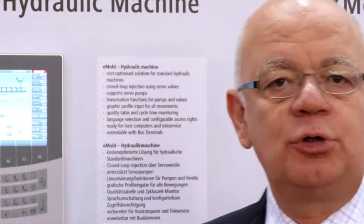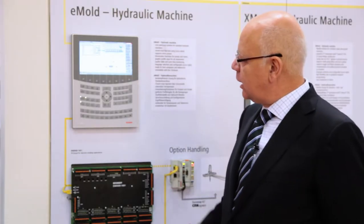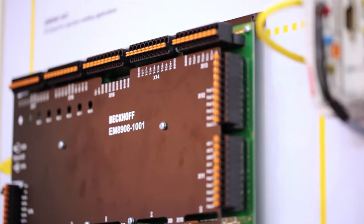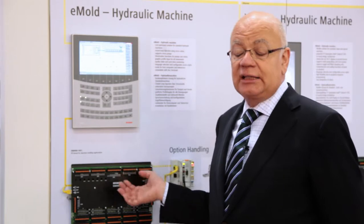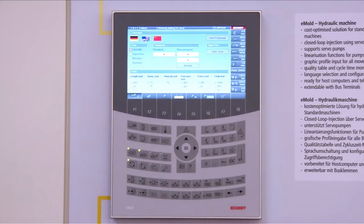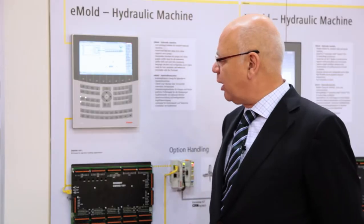eMold is a cost-effective solution for standard applications in the injection molding industry. eMold consists of the I/O board and a panel PC which contains atom processors, so that the customer has high-speed computing power on the system.